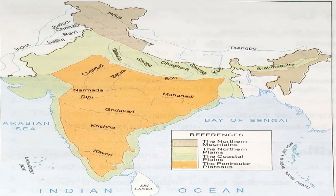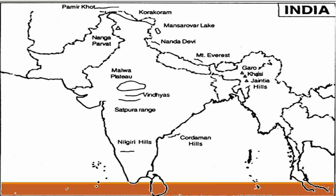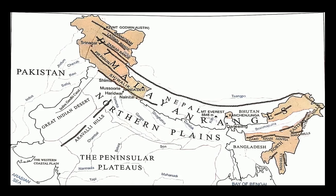Today we will be discussing the northern mountains only. When we are talking about northern mountains, we need to understand a few things. The northern mountains basically include the Himalayan and the Karakoram mountain ranges as well as the Purwanchal hill ranges. As you can see on the map, the northern mountains stretch across the northern boundary of India.